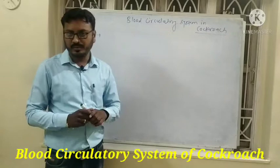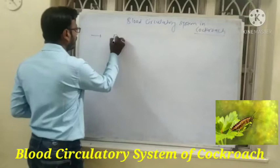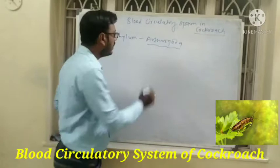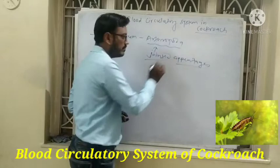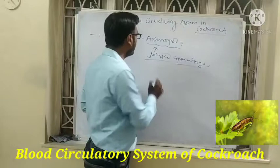Now we move towards the main topic: the blood circulatory system of the cockroach. Before that, some introductory information — cockroach comes under the phylum Arthropoda. It comes under Arthropoda because 'arthro' means jointed appendages, meaning their legs have joints.